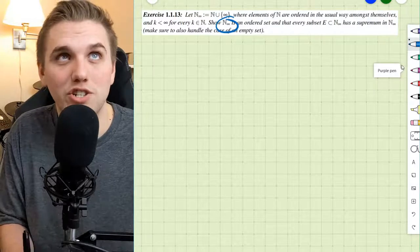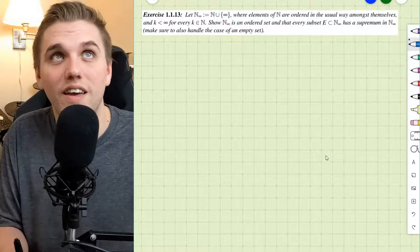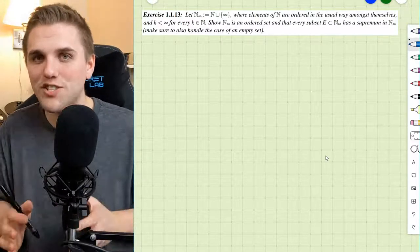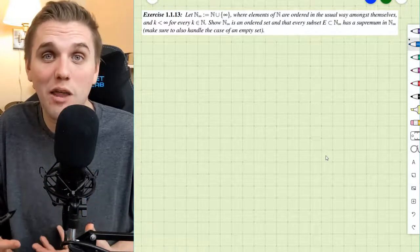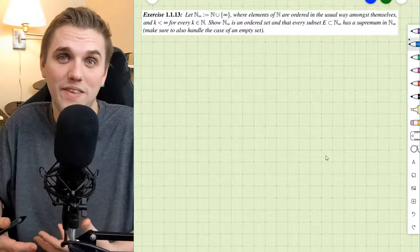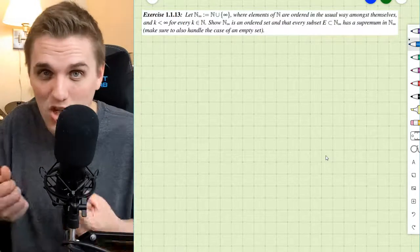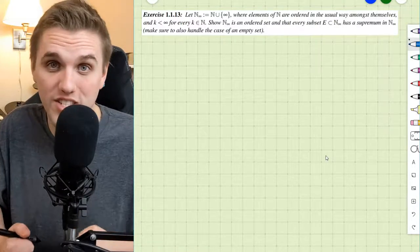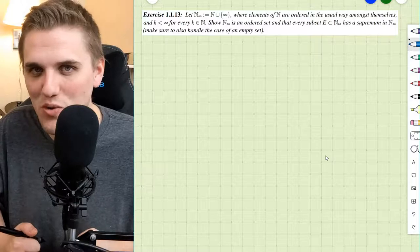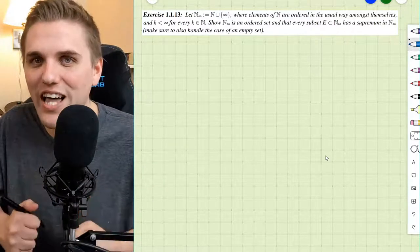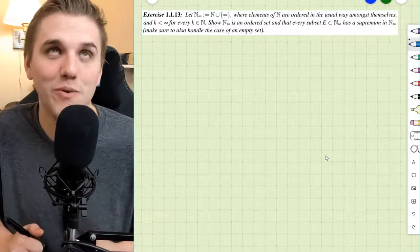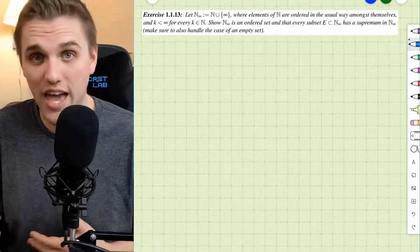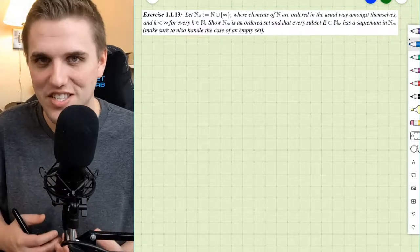Let's start by showing that this special set is an ordered set. That means I can compare any two elements in this set — if I take two elements, either one is bigger than the other or they're the same, and exactly one of those has to be true. We also need to show that the transitive property holds: if A is less than B and B is less than C, then A is less than C.